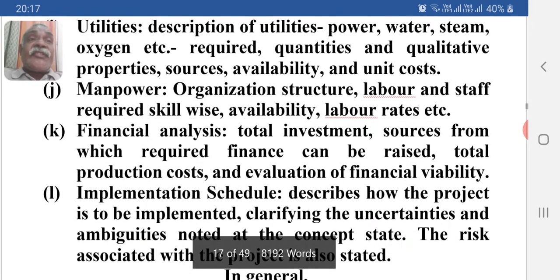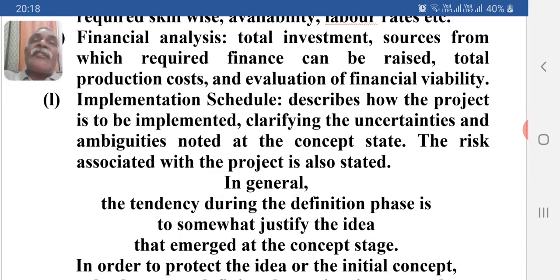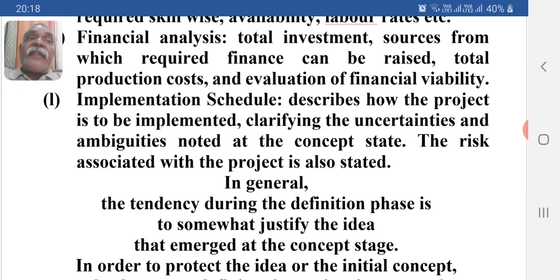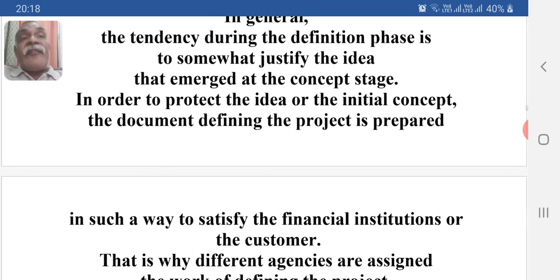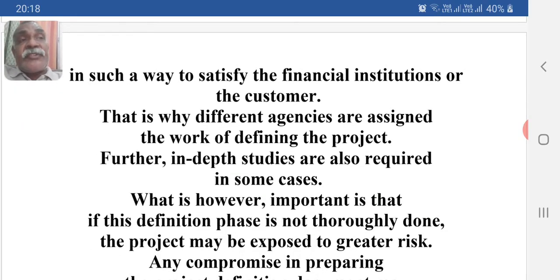Further documentation also covers: manpower — organization structures, labor and staff required, skill-wise availability, and labor rates; and financial analysis — total investment, sources from which required finance can be raised, total production costs, and an evaluation of financial viability. The implementation schedule describes how the project is to be implemented, clarifying uncertainties and ambiguities noted at the conceptual stage, and the associated risks are also stated. In general, the tendency during the definition phase is to somewhat justify the idea that emerged at the conceptual stage, and the document defining the project is prepared to satisfy financial institutions or customers.